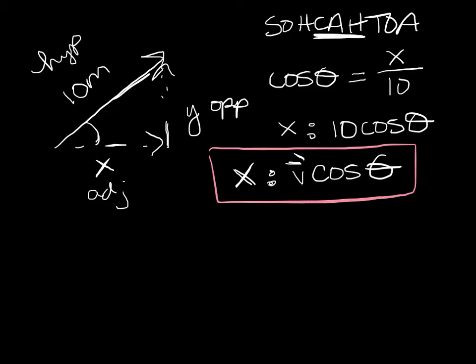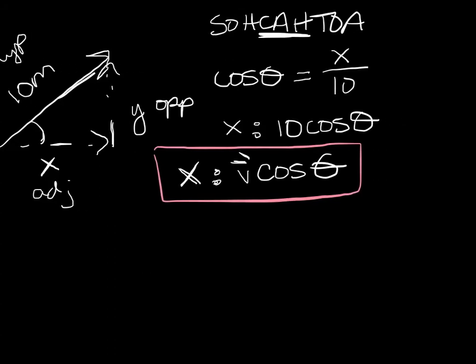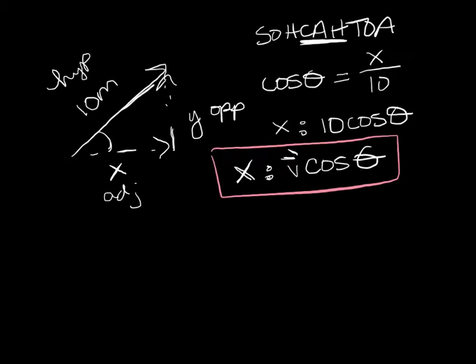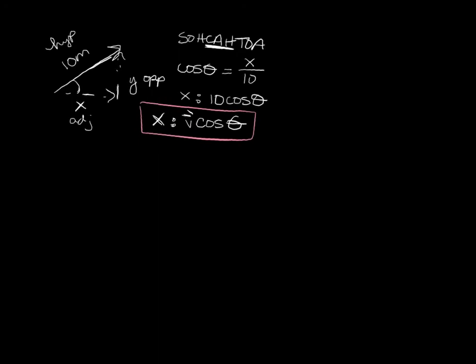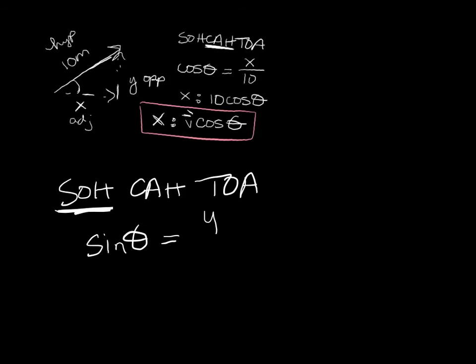Our y component, so when we go and we look at the y component, we find that the y is our opposite. So SOHCAHTOA again. Y is opposite and the 10 is our hypotenuse, so we're going to be using sine. So the sine of the angle is equal to the opposite, which is the y, which is what we're looking for, divided by the 10.